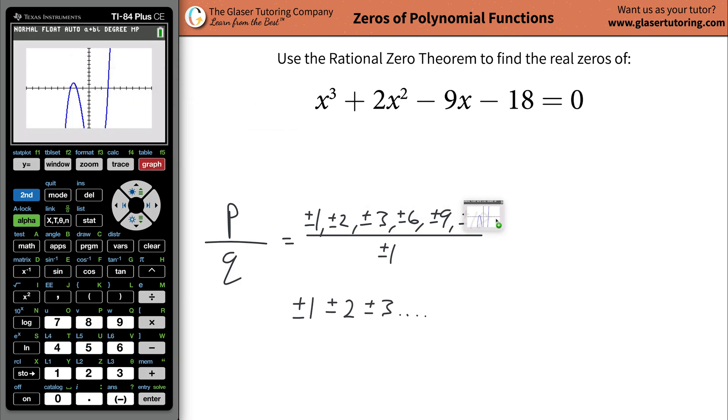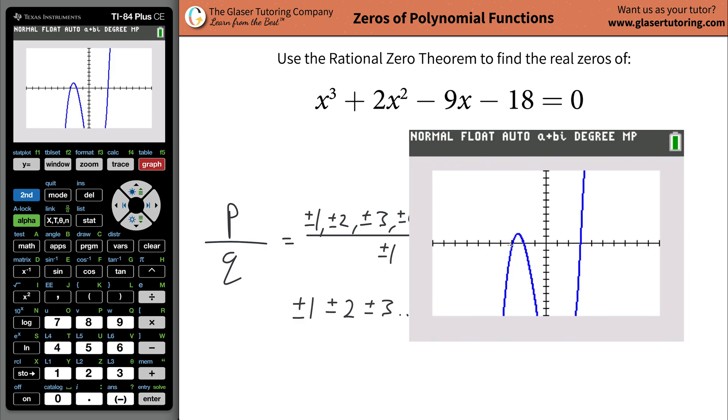Now look at this. When we take a look here, we notice that we have the zeros, remember, where the x values, where the function crosses that x-axis. So it appears to me that it crosses at negative two, negative three, and a positive three. So let's just write that on up here. So we got x is equal to positive three, x is equal to negative two, and x is equal to negative three.